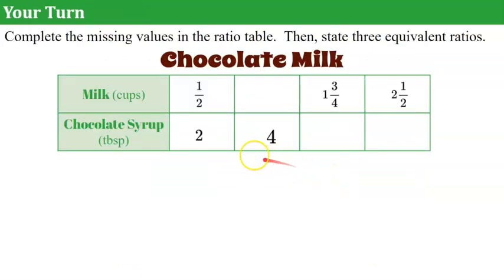Your turn. I have a ratio table here that is somewhat completed for you. I would like you to use the relationships that we just discussed and complete the missing values in the table and then state three equivalent ratios. Go ahead and pause and come back when you're ready to check your work.